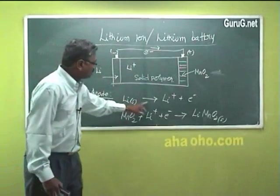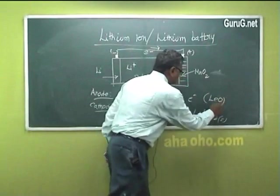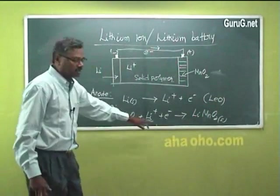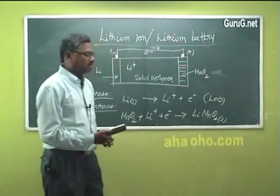At anode, oxidation takes place, loss of electron oxidation. At cathode, reduction takes place, electrons are consumed. It forms Li-MnO2, a solid.